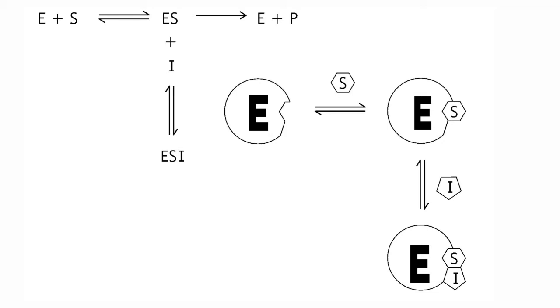Once the ES complex is formed, then only it will bind with the enzyme. The inhibitor binds only with the ES complex and will not bind with the free enzyme.